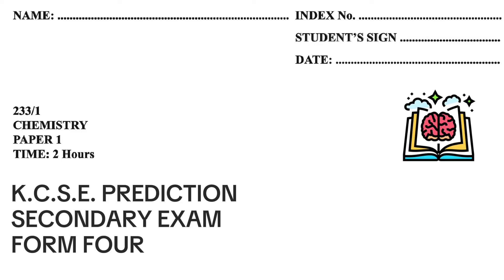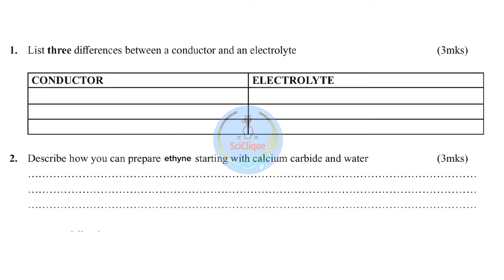Let's discuss chemistry paper one prediction exam. Question one: list three differences between a conductor and an electrolyte. Conductors include all metals — zinc, copper, magnesium — and one non-metal, graphite. These are conductors because they have delocalized electrons, which are electrons capable of moving within the structure and therefore conducting an electric current. Conductors are in solid state.